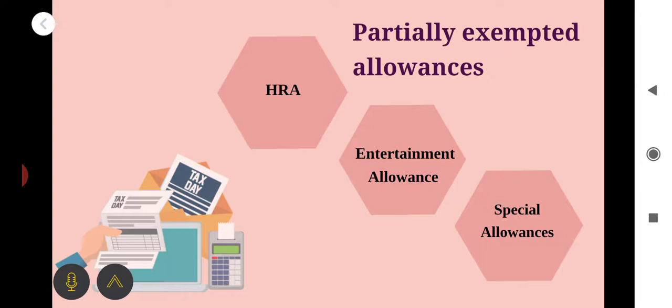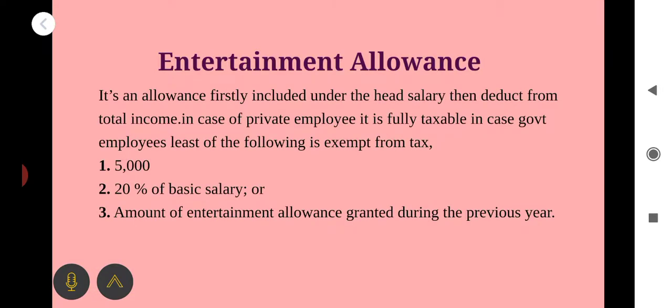Today we would like to discuss entertainment allowance and some special allowances. What is meant by entertainment allowance? It is an allowance firstly included under the gross salary and then deducted from the total income. In the case of private employees, it is fully taxable. In the case of government employees, the least of the following is exempted from tax.